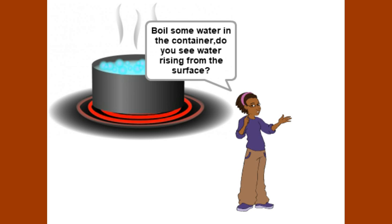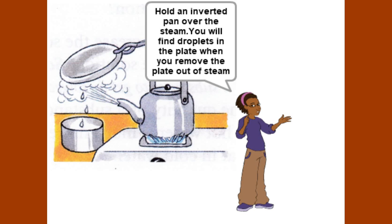Boil some water in the container. Do you see water rising from the surface? Hold an inverted pan over the steam. You will find droplets on the plate when you remove the pan.